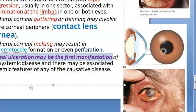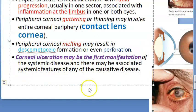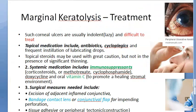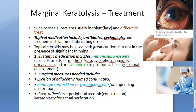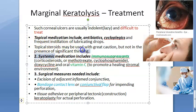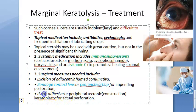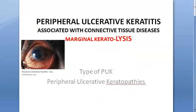Importantly, corneal ulceration may be the first manifestation of the underlying systemic disease. Treatment is difficult: topical antibiotics, cycloplegics, lubricating drops, steroids used with caution, systemic immunosuppressants including corticosteroids, methotrexate, cyclophosphamide, doxycycline, and vitamin C. Surgical options include excision of inflamed conjunctiva, bandage contact lens, conjunctival flap for impending perforation, tissue adhesive and peripheral tectonic keratoplasty for actual perforation. That completes the topic of marginal keratolysis.